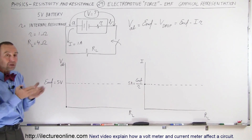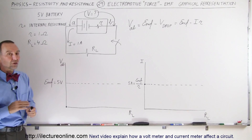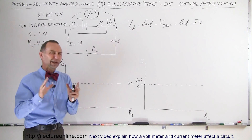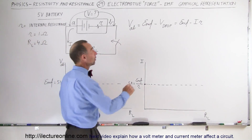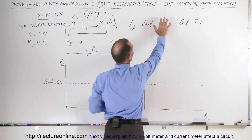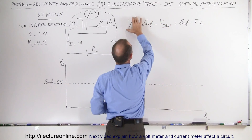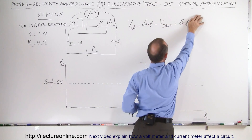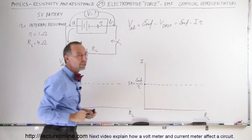The EMF equals the voltage from A to B when there's no load resistor and no current flowing in the circuit. If there's no current flowing, there's no voltage drop, and the voltage from A to B is simply equal to the EMF. So if there's no current, the voltage from A to B equals the EMF.